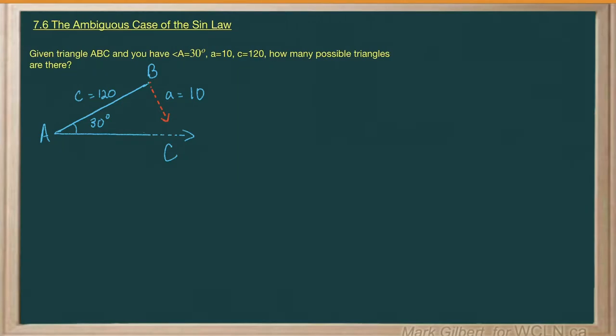Given triangle ABC, and you have angle A equal to 30, side A equal to 10, side C equal to 120, how many possible triangles are there?